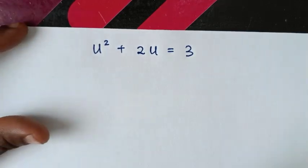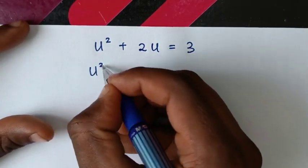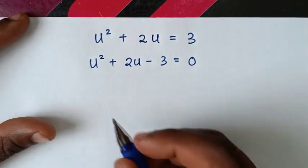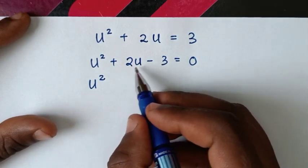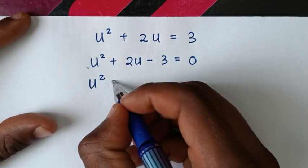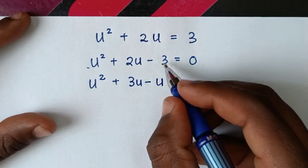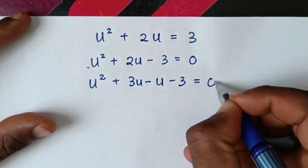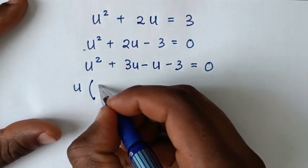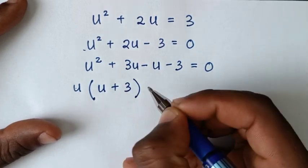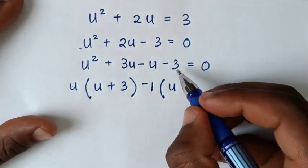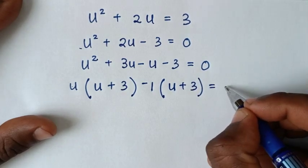Taking 3 to the left side gives u² + 2u − 3 = 0. We solve by factoring: 2u can be split as +3u − u, giving u² + 3u − u − 3 = 0.